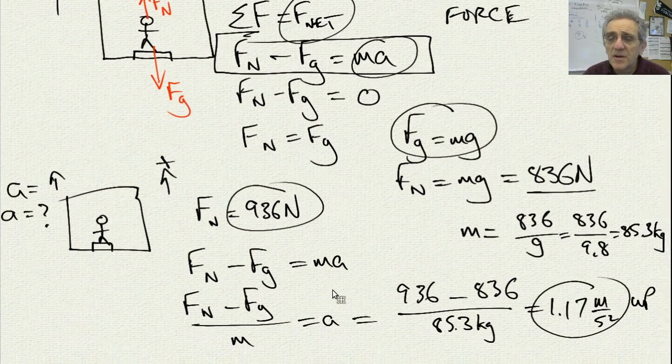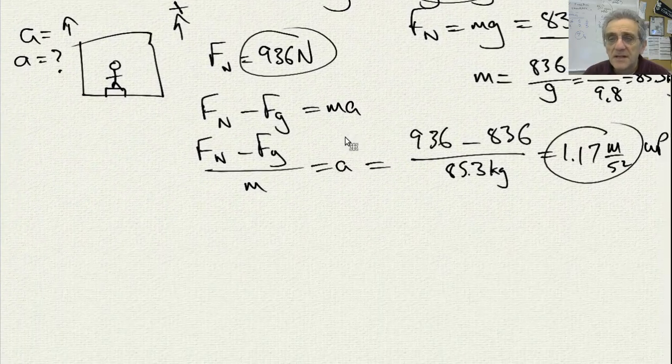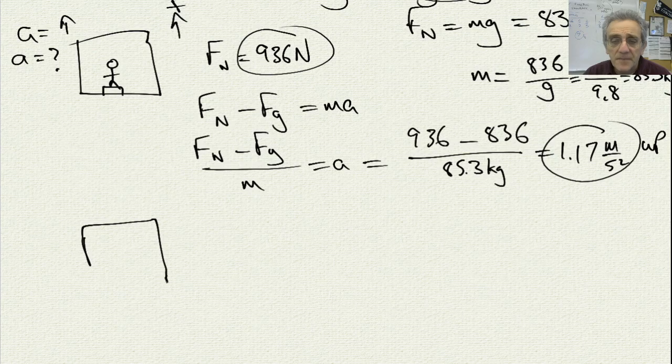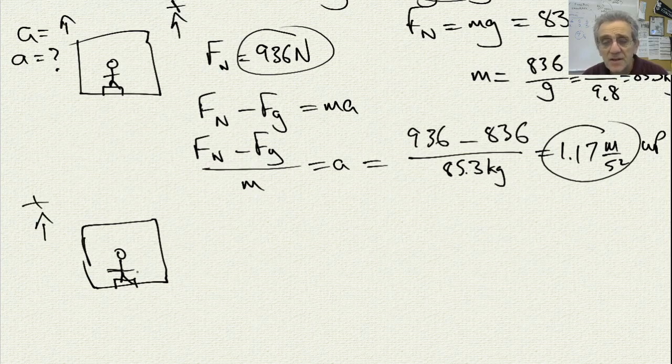The second part of the question says, at this point, the elevator is almost at, or getting close to the floor it wants to stop at, and so now, my up direction is still positive. That doesn't change. But now, what is the acceleration if the elevator starts to slow down while it's going up?